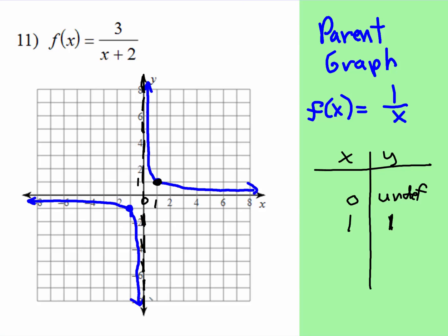So that is the basic graph, and if you plot a bunch of other points, there will be mostly fractional points, but this is what the graph looks like. Notice if we put in negative 1, 1 divided by negative 1 is negative 1, which is why I plotted that point right there. And that is the parent graph.